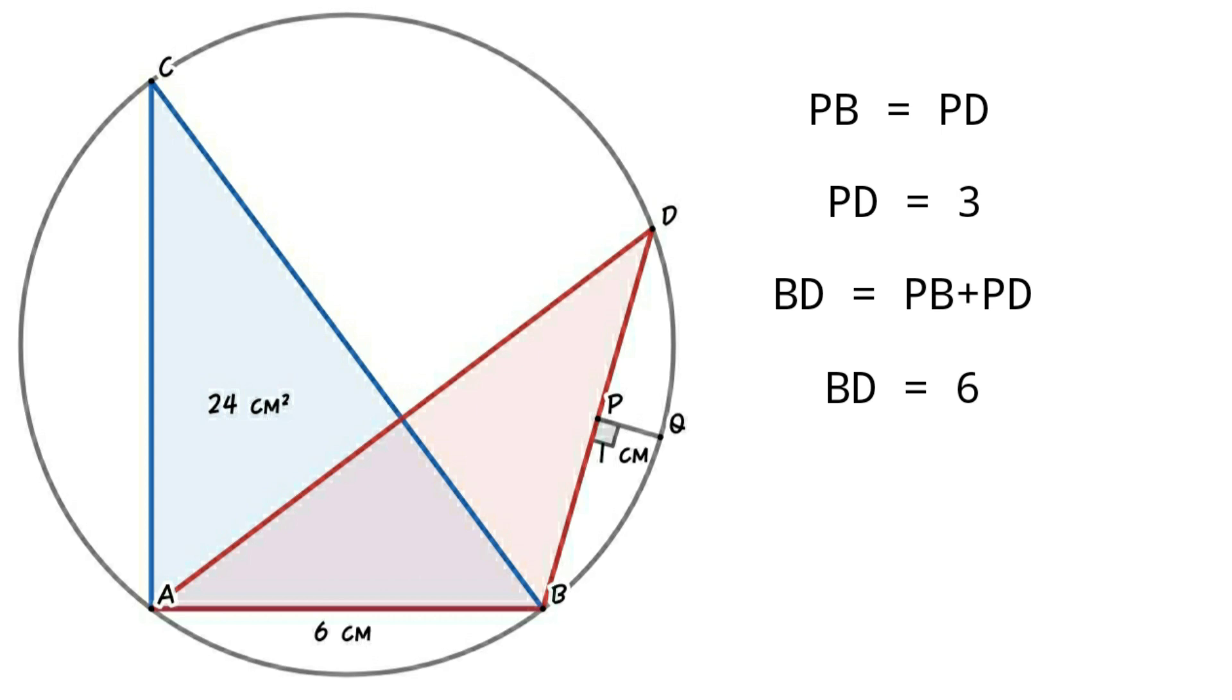So we understand that AB equals BD. That is, ABD is an isosceles triangle. So angle BAD equals angle ABD. And BO will be the angle bisector of angle B, because BO is passing through the center of the circle.